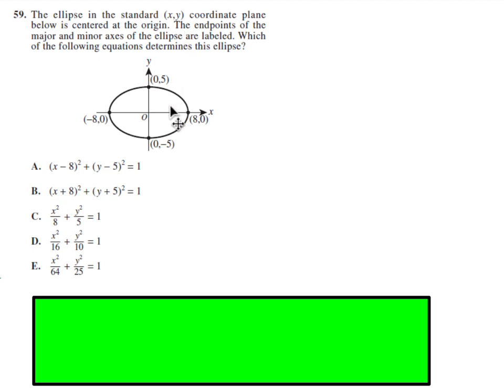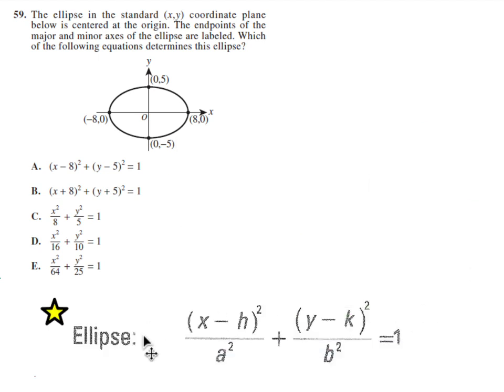Number 59 has to do with an ellipse. We just have to match this ellipse to the equation that goes with it. An ellipse is basically an oval shape. This is the general equation for any ellipse. The h is the x-coordinate of the center of the ellipse. In this case, the h would be 0. The k is the y-coordinate of the center, and that would also be 0. The a is equal to the horizontal distance from the center, which is 8. And the b is the vertical distance up and down from the center, so b would be 5. But then 8 squared is 64 and b squared is 25. And x minus 0 is x, and y minus 0 is y. So the answer is E.